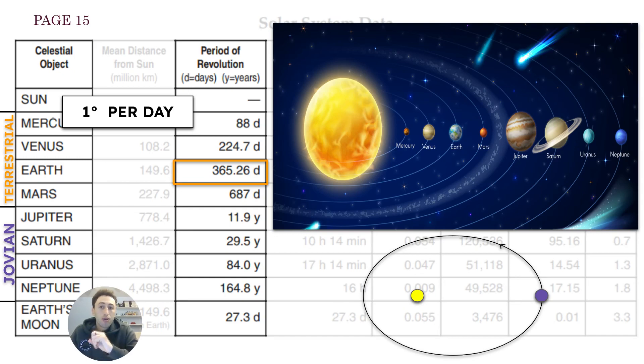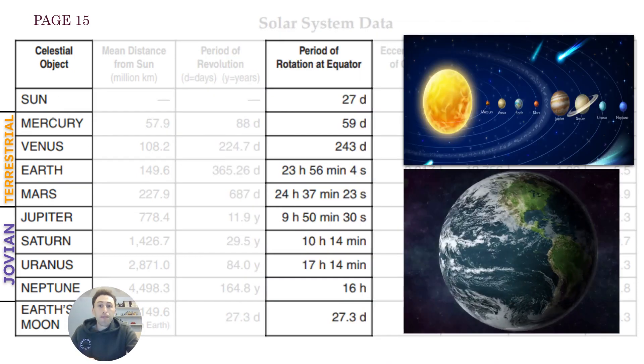If you do 365 divided by 360 degrees, which are in a circle, that would be one degree per day. The Earth's rate of revolution is one degree per day.